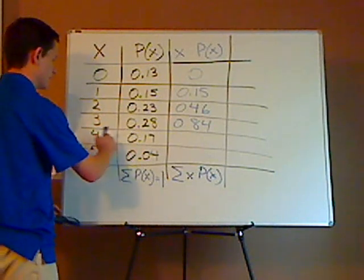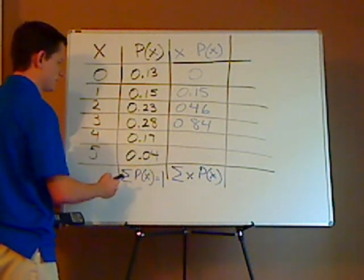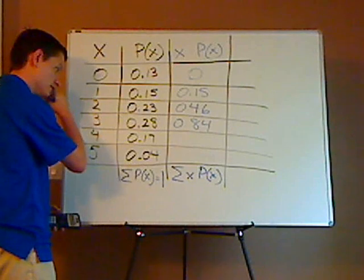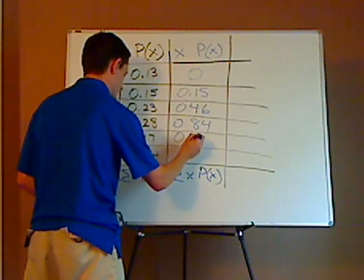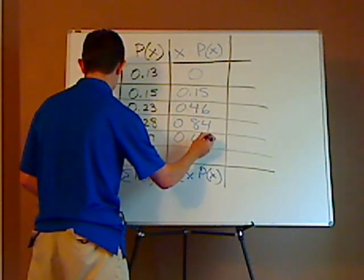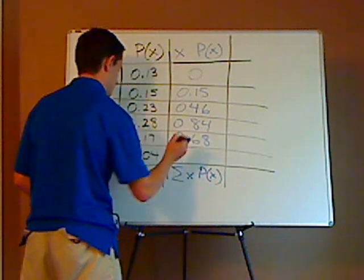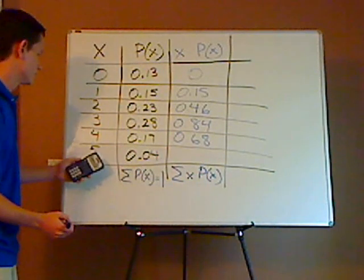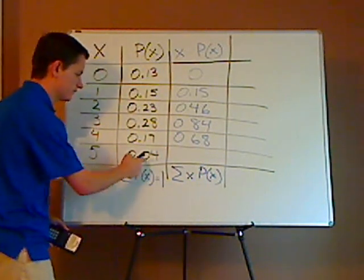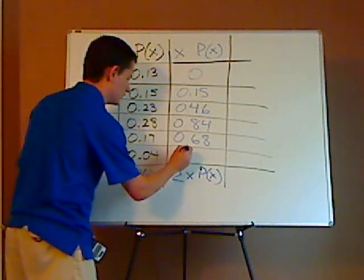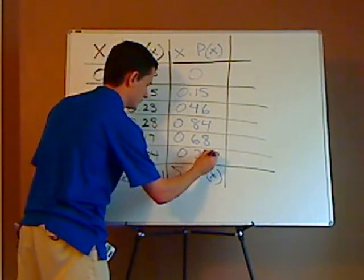This 4 times 0.17 is 0.68. And then for the last one, 5 times this is 0.20.